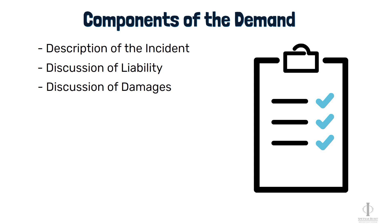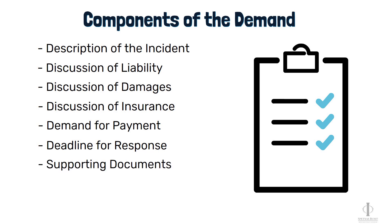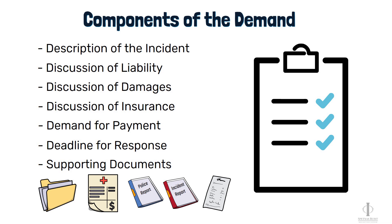The damages discussion also covers medical bills, lost wages, and how your injuries have affected your life. Additionally, there will be a discussion of insurance coverage and the applicable insurance policy limits, a demand for payment — which is an offer to settle the case for a specific amount of money — and a deadline for a response, which gives the defense a specific amount of time to respond. The demand letter will also include supporting documents like medical records, medical bills, police reports if the case involved a motor vehicle, incident reports for cases involving premises liability, lost wages documentation, and any other evidence that might help support our demand for payment.